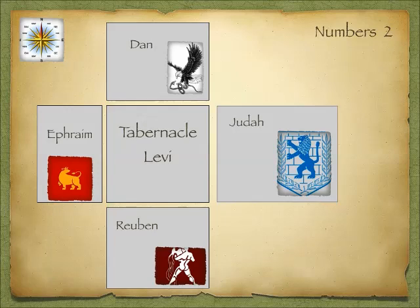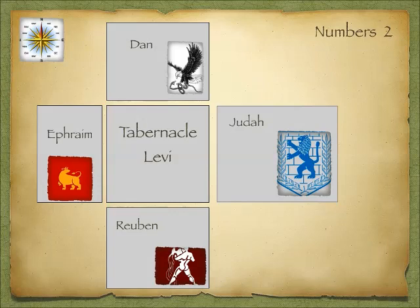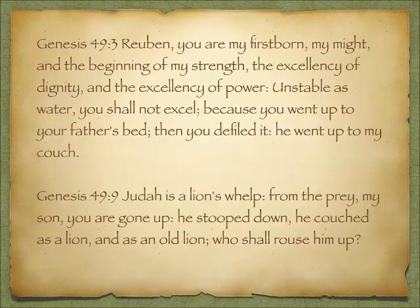If you research different websites that give the flags, you will see many different groupings. Judah is almost always a lion. On those websites you won't often see Ephraim — what you will see instead is a picture for Joseph. Dan can be a snake or an eagle. We'll see how that all comes together.